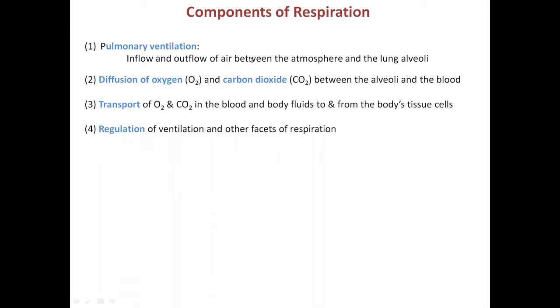The first one is pulmonary ventilation, which deals with the inflow and the outflow of air between the atmosphere and the lung — this is the job of the lungs. Then the diffusion of oxygen taken from the atmosphere and the carbon dioxide generated as a byproduct of cellular metabolism. The exchange of these gases takes place between the alveoli and the blood, and the transport of O2 and CO2 in the blood to and from the body tissue cells.